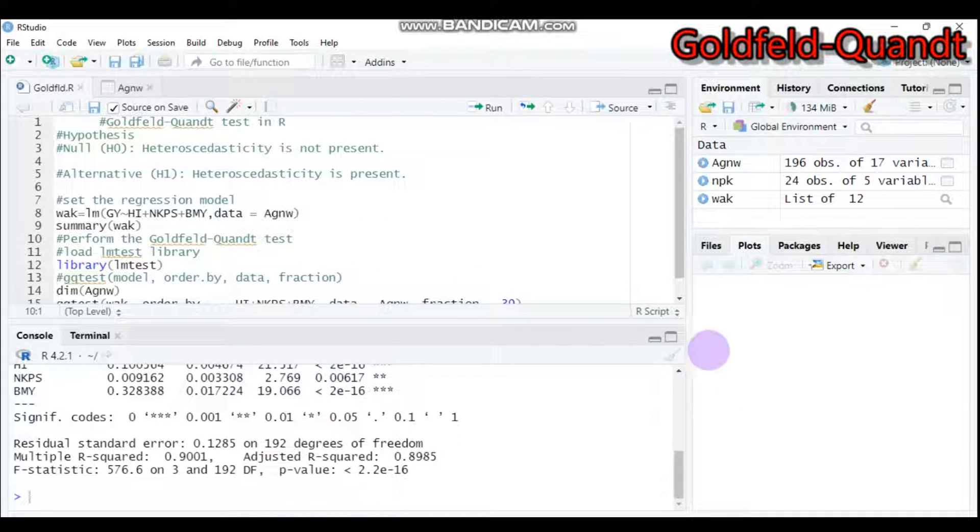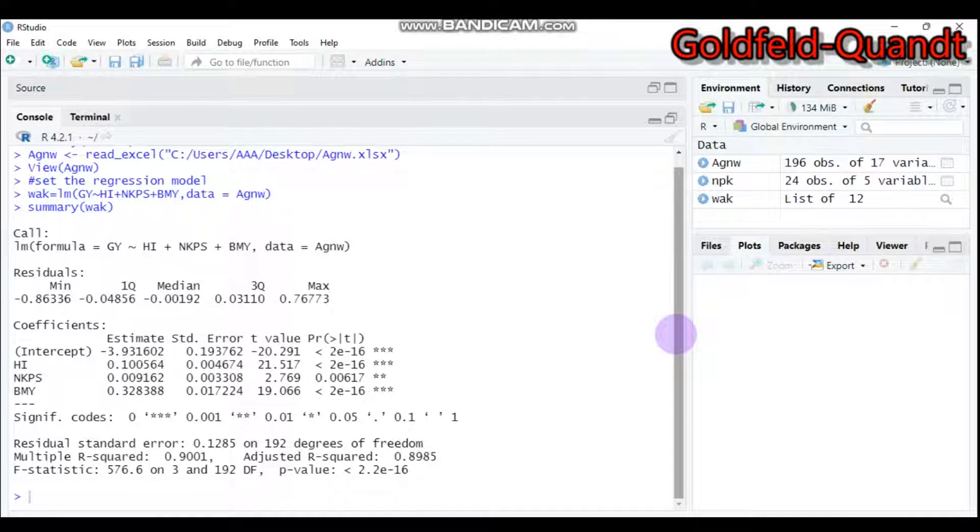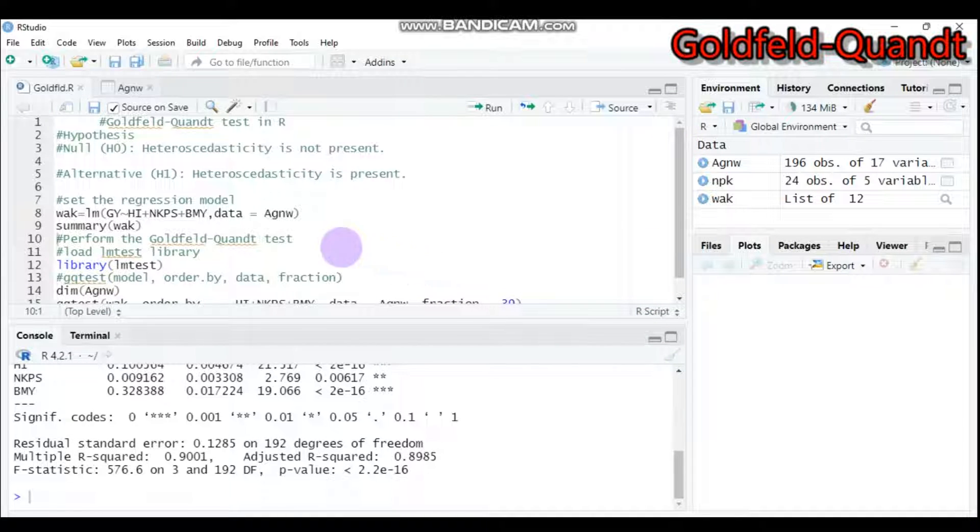If you want to check the summary, all the predictors are significantly affecting the response variable or the grain yield. So the second step is to perform the Goldfeld-Quandt test in order to check whether heteroscedasticity is absent or present.